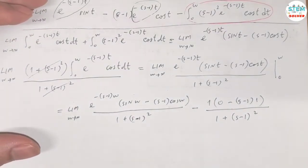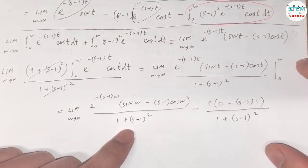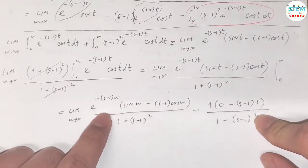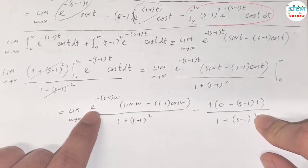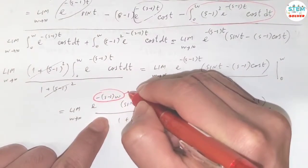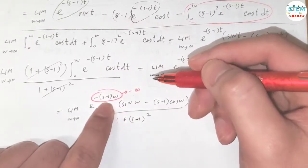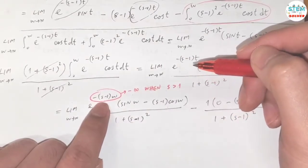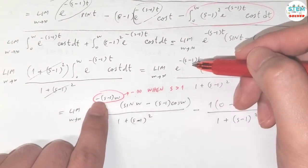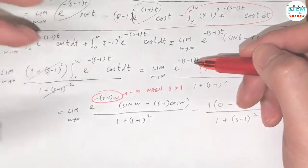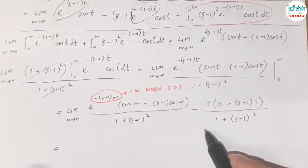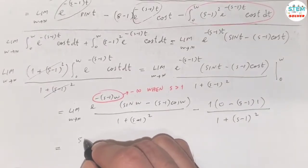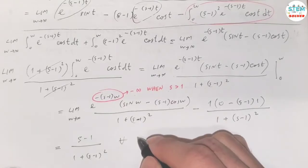Back to the definition of the Laplace transform — for it to exist, its values must converge, meaning the limit goes to a finite number. For the term with e^(-(s-1)w), it converges when the exponent goes to negative infinity, which happens when s is greater than 1. When s > 1 and w goes to infinity, e^(-(s-1)w) goes to 0, so that term vanishes. Our final answer is (s-1) over [1 plus (s-1)²], for s greater than 1.